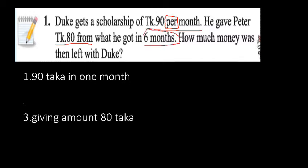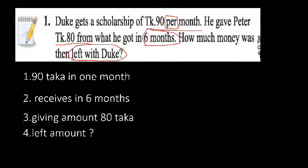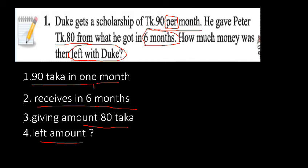He received money over six months and the giving amount is 80 taka. From that, we have to find the left amount. Our first clue: receiving in one month is 90 taka, and giving from that is 80 taka. From one month we can get the six-month amount, so he received 540 taka in total.